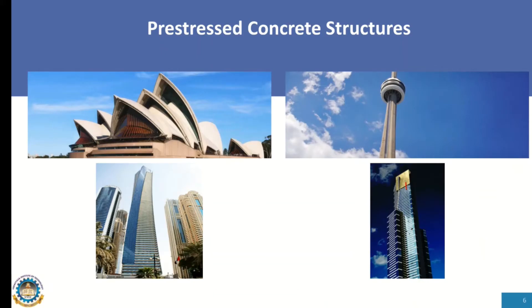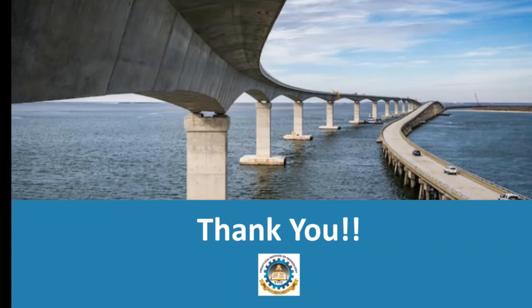Now let's look at some famous structures in which pre-stressed concrete has been used for construction. The Sydney Opera House, the CN Tower in Toronto, Eureka Tower in Melbourne, and Ocean Heights are among several structures constructed using pre-stressed concrete. These are just a few examples. That's a brief overview of pre-stressed concrete — hope you have gained some information about it. Thank you for watching.